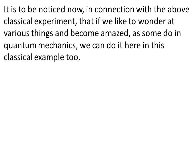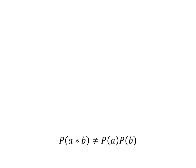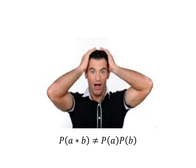It is to be noticed now, in connection with the above classical experiment, that if we like to wonder at various things and become amazed, as some do in quantum mechanics, we can do it here in this classical example too. For instance, we may be puzzled by the fact that a measurement M_A' which we carry out on vessel A, and which gives the result yes, in some mysterious way causes M_B to be necessarily yes and not anything else, if someone cares to check that. Therefore, we may continue, if we consider this path of thought fruitful, to get further amazed that information between A and B has passed at a speed greater than the speed of light. We can even write that the common probability P_AB does not equal anymore the product P_A P_B and conclude all kinds of other things.